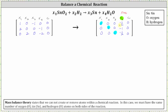From the first row, we have the equation x sub one minus one half x sub four equals zero. The second row gives us the equation x sub two minus x sub four equals zero. The third row gives us the equation x sub three minus one half x sub four equals zero.